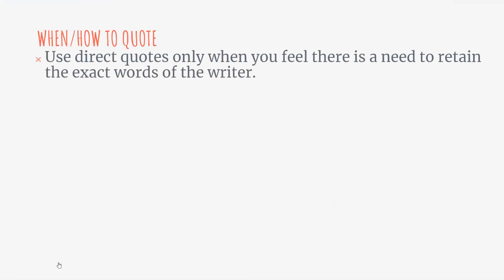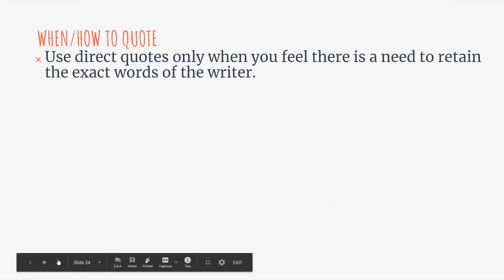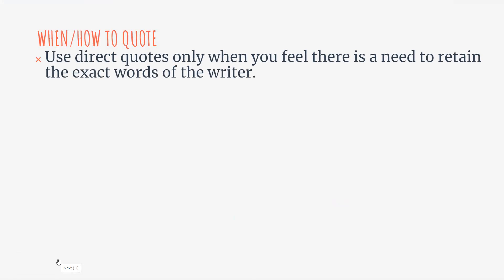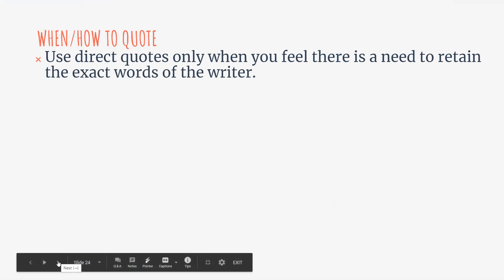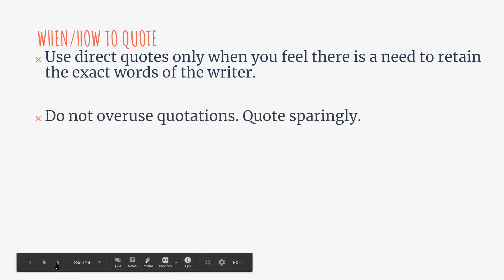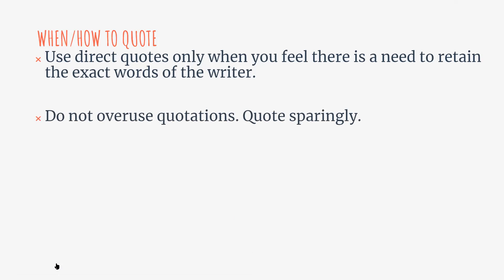When and how to quote: use direct quotes when you feel there is a need to retain the exact words of the author. Weirich (2011) in the book Steps to Writing Well says it's best to use a direct quotation only when it expresses a point in a far more impressive, emphatic, or concise way than you could say it yourself. So it must be a quote that is really more impressive and emphatic than you could possibly do in a paraphrase. Remember not to use your quotations too excessively — quote sparingly, not excessively.